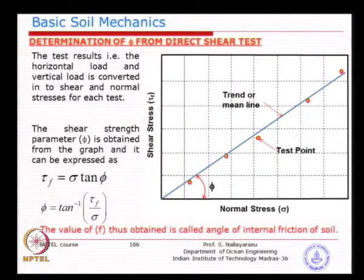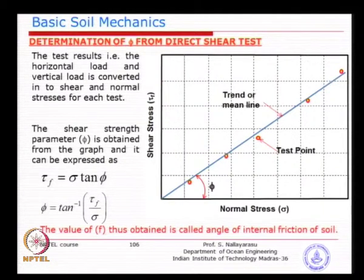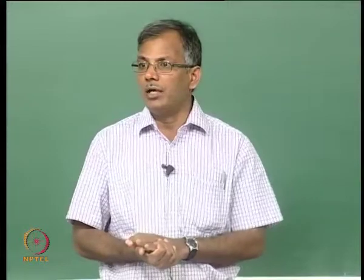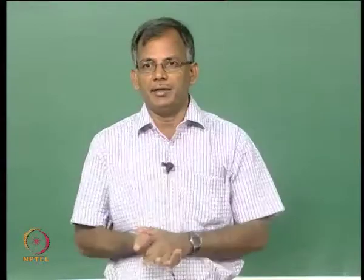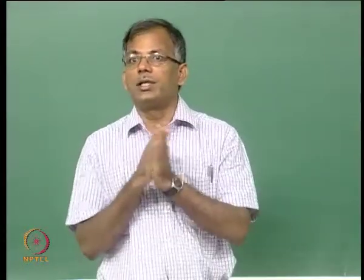If you have a larger normal force, you will see higher effort required to break the specimen. You can have multiple points on a graph which you plot to get the shear strength value — the angle of internal friction. You repeat the test with different normal stress values, get the shearing stress, and fit a trend line so that you can predict the values. If you have test results for a sandy material, you take the angle proportional to the shear stress and normal stress, and find out the angle of internal friction.